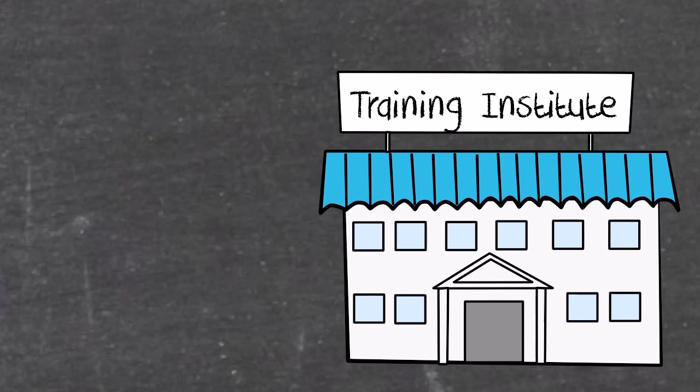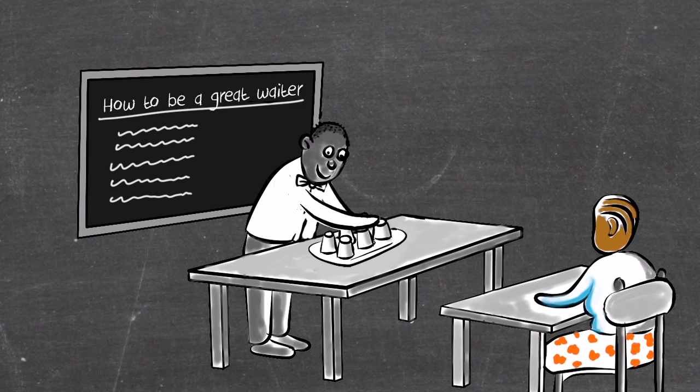Dolly wants to learn skills that will help her get a job. She goes to an Educans supported training institute. Here, she learns how to become a great waitress. The lessons are very practical.